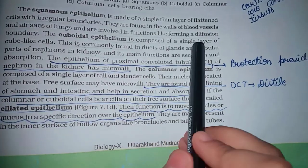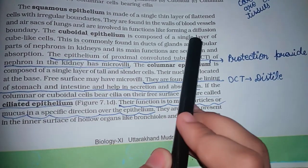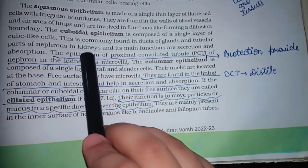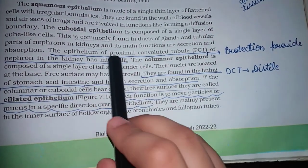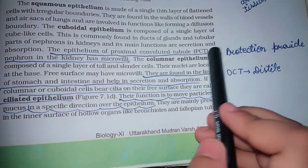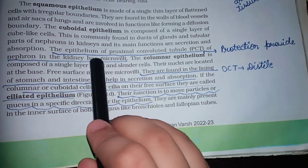The cuboidal epithelium is composed of a single layer of cube-like cells. This is commonly found in ducts of glands and tubular parts of nephrons in kidneys and its main functions are secretion and absorption. The epithelium of proximal convoluted tubule PCT of nephron in the kidney has microvilli.